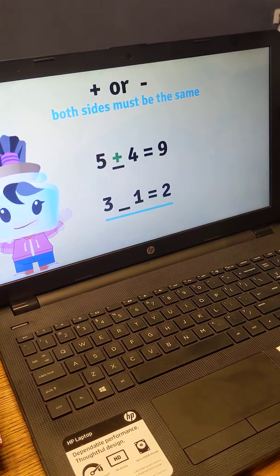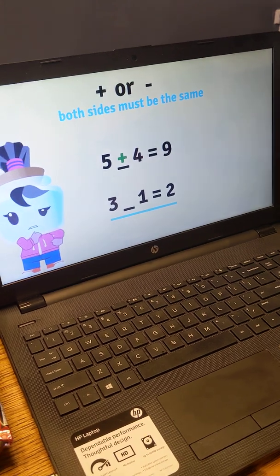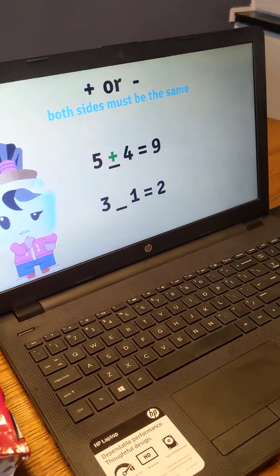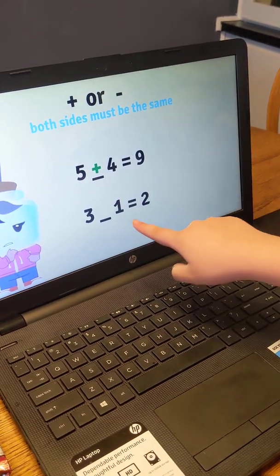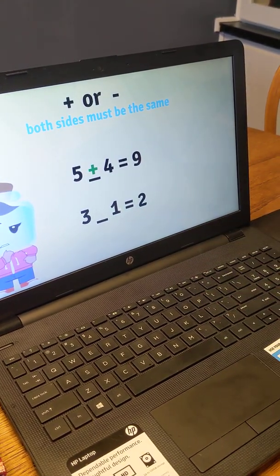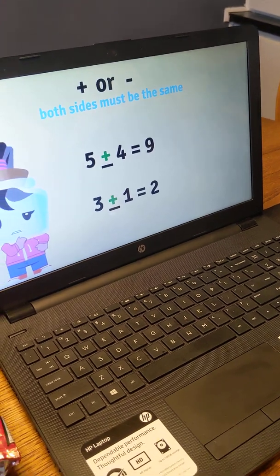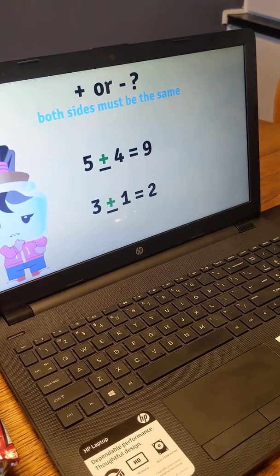How about this equation? Which math symbol would you use to fill in the blank? I think 3 minus 1 equals 2. Oh, yeah. If we use plus, we will have 3 plus 1.